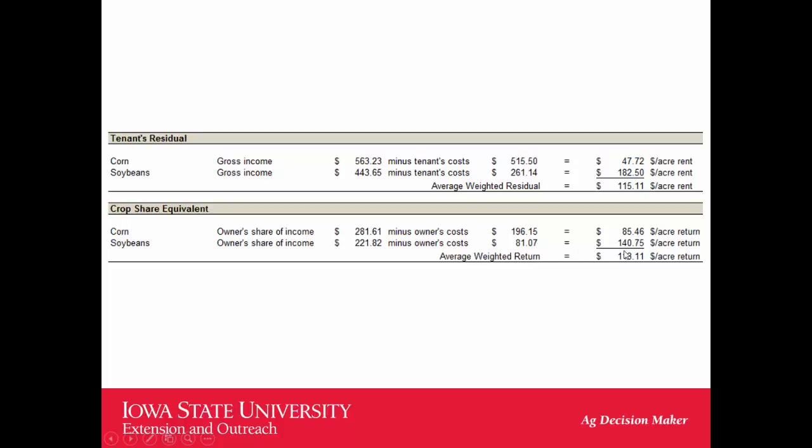So there's only $85 left over for the landlord on corn. On beans it looked a little better, so we ended up with a weighted return of about $113 per acre. This is simply a way of looking at calculating rent using six different methods — and again all of them have value, though maybe not equal value.